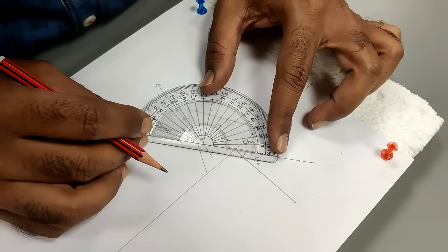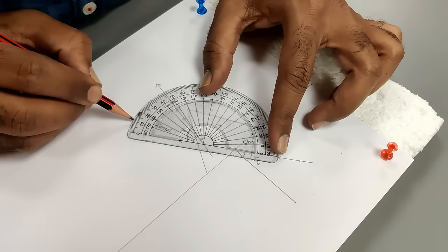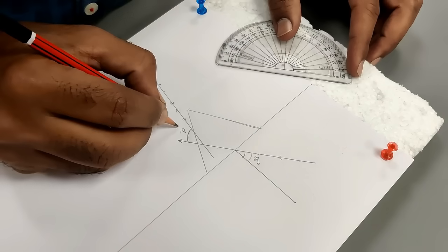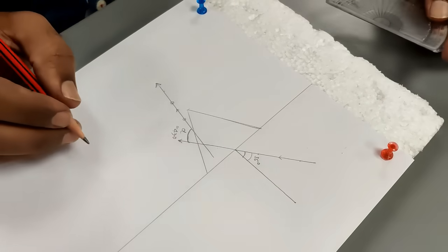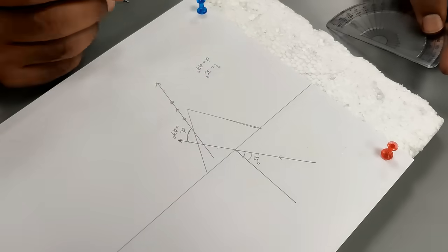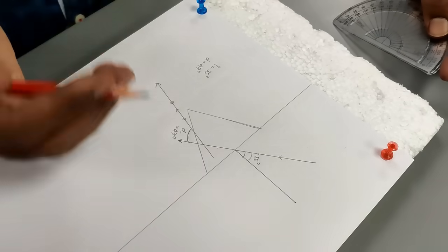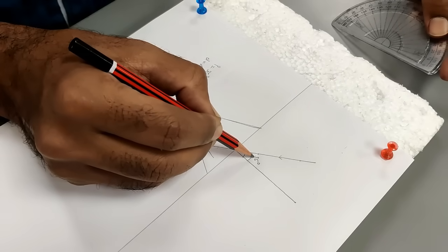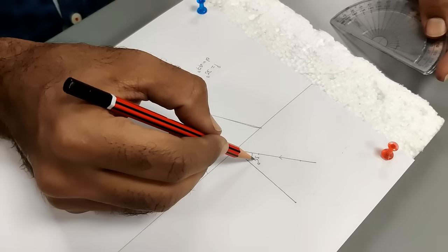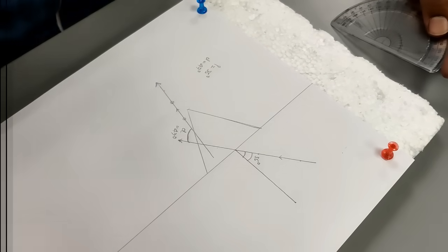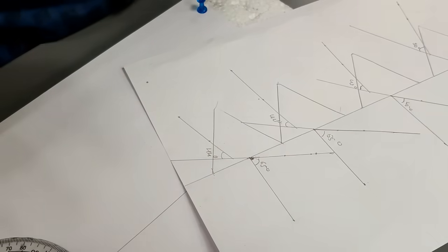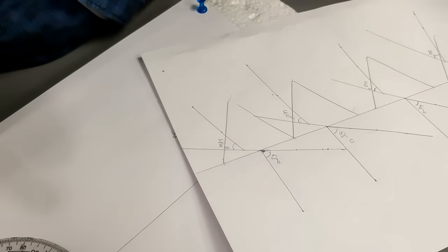To measure the deviation angle, place the protractor at the point of intersection of the extended incident ray and the emergent ray, with the baseline along the incident ray. Reading the protractor: 0, 10, 20, 30, 40, 45, 46, 47 — so the deviation is 47 degrees for an angle of incidence of 35 degrees. This completes the first trial.